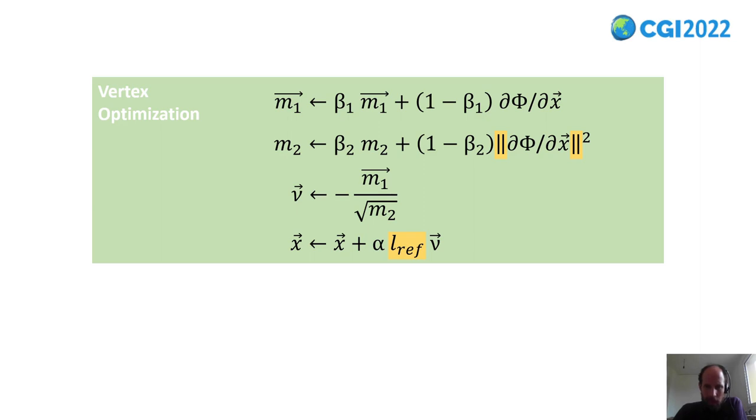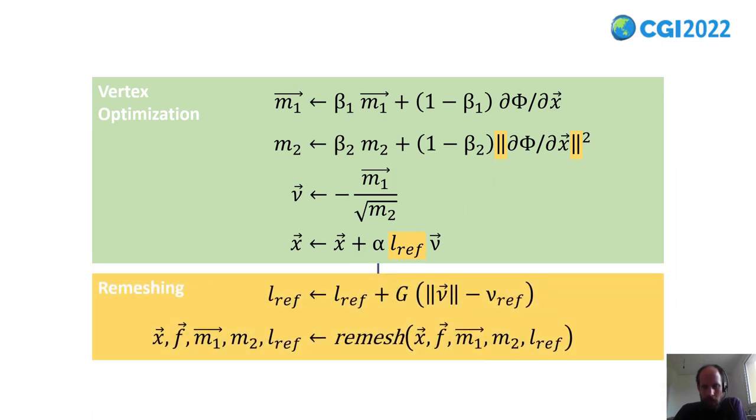This is now our complete update rule. We have the modified Adam optimizer, then the closed-loop controller, and finally the actual remeshing.